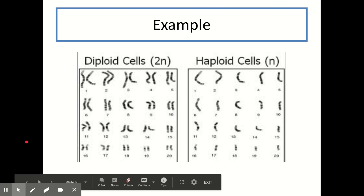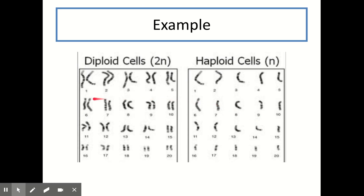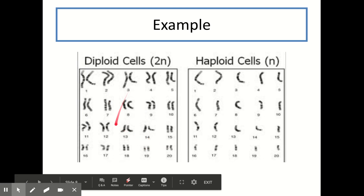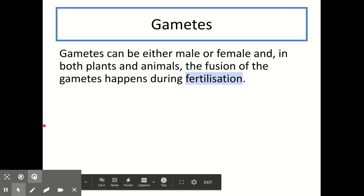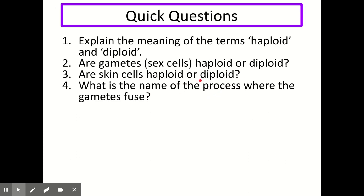Here's another example. A haploid cell with 20 chromosomes in its nucleus — as seen on the right — would be the nucleus of a gamete such as a sperm or egg cell, because there's only a single set of chromosomes. The diploid version of this cell, on the left, has 40 chromosomes — two of each type, so two matching sets. Gametes can be either male or female and are found in plants and animals, as both take part in sexual reproduction. When male and female gametes fuse together, this process is called fertilization.